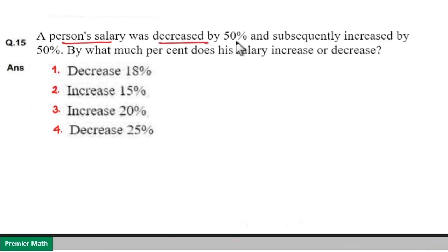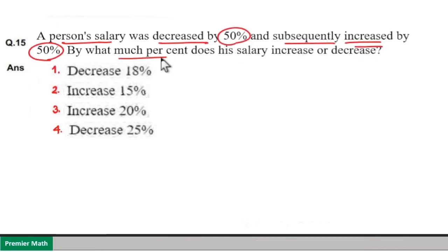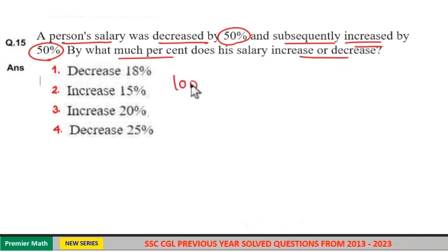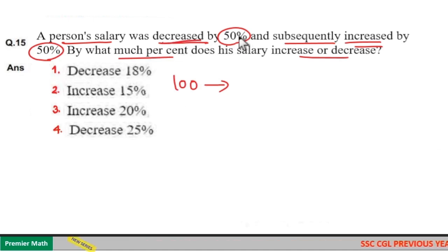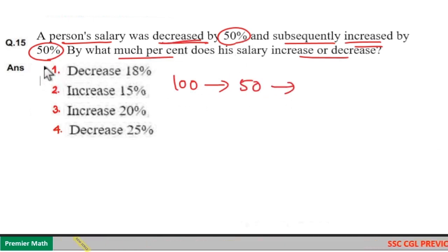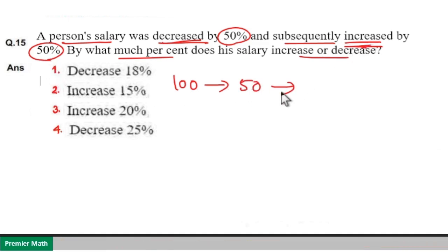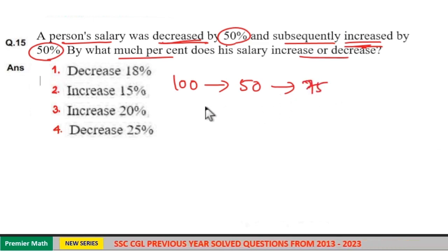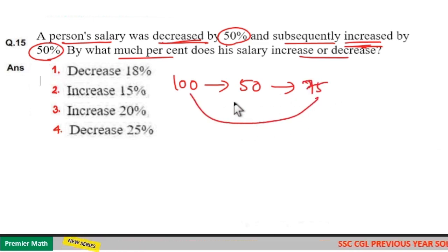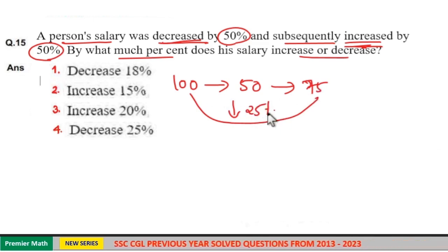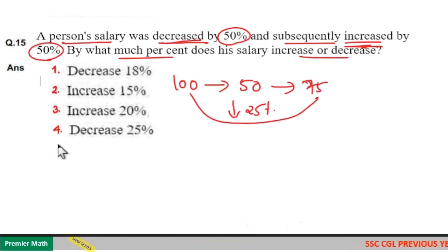A salary of Rs.1000 was decreased by 50% and subsequently increased by 50%. By what percentage does the salary increase or decrease? Consider 100 rupees as the salary. Decreased by 50% gives 50 rupees. Increased by 50% means 50% of 50 is 25, so 50 plus 25 equals 75. Decrement equals 100 minus 75 equals 25%. Option 4 is your answer.